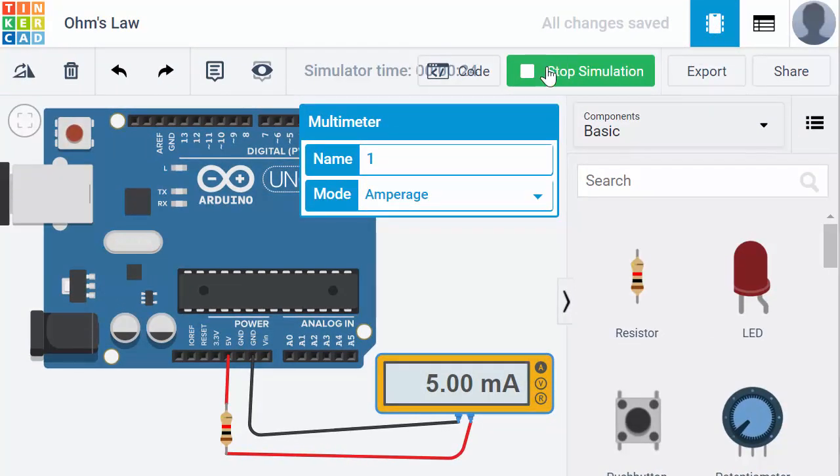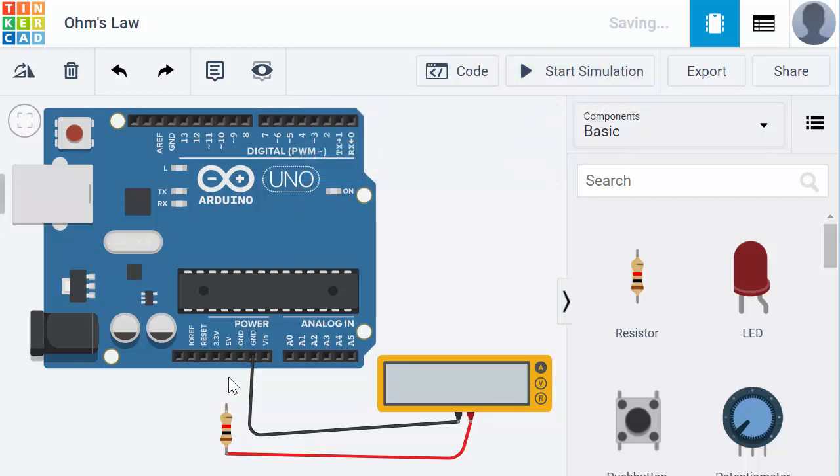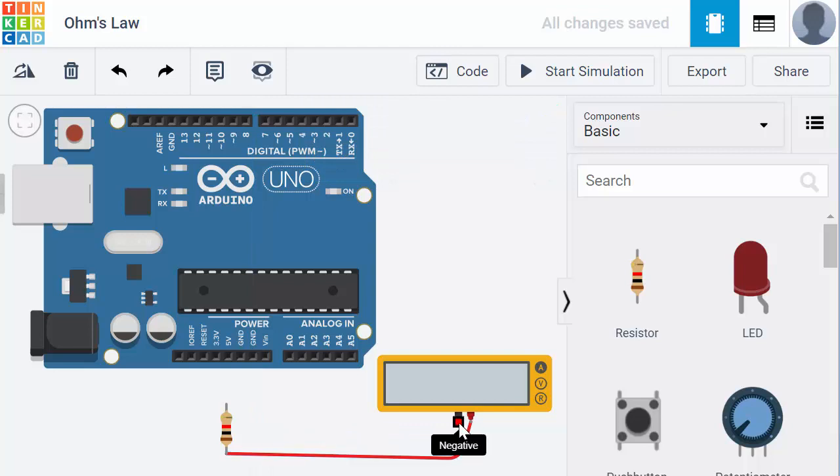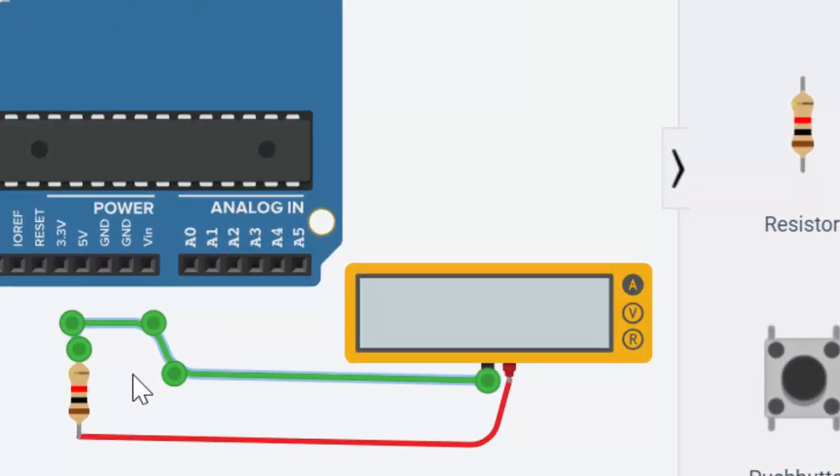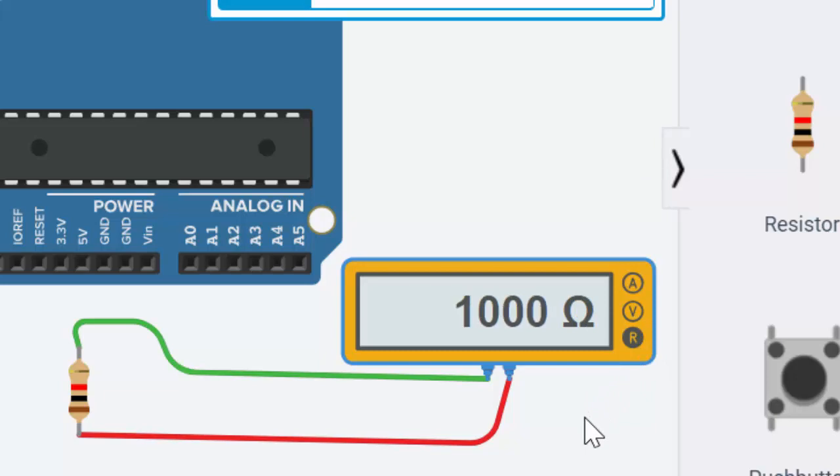And the last thing we might want to do would be to measure the resistance of that resistor. So if I delete this one wire and just hook up the multimeter to ohms. So we'll connect this wire over to measure ohms. All you do is just put the leads right in parallel with the resistor. And I'll put this on the ohm setting. We'll run this, start the simulation, put this on ohms, and it should say one kilohm. There it is. One kilohm, same as 1000 ohms.